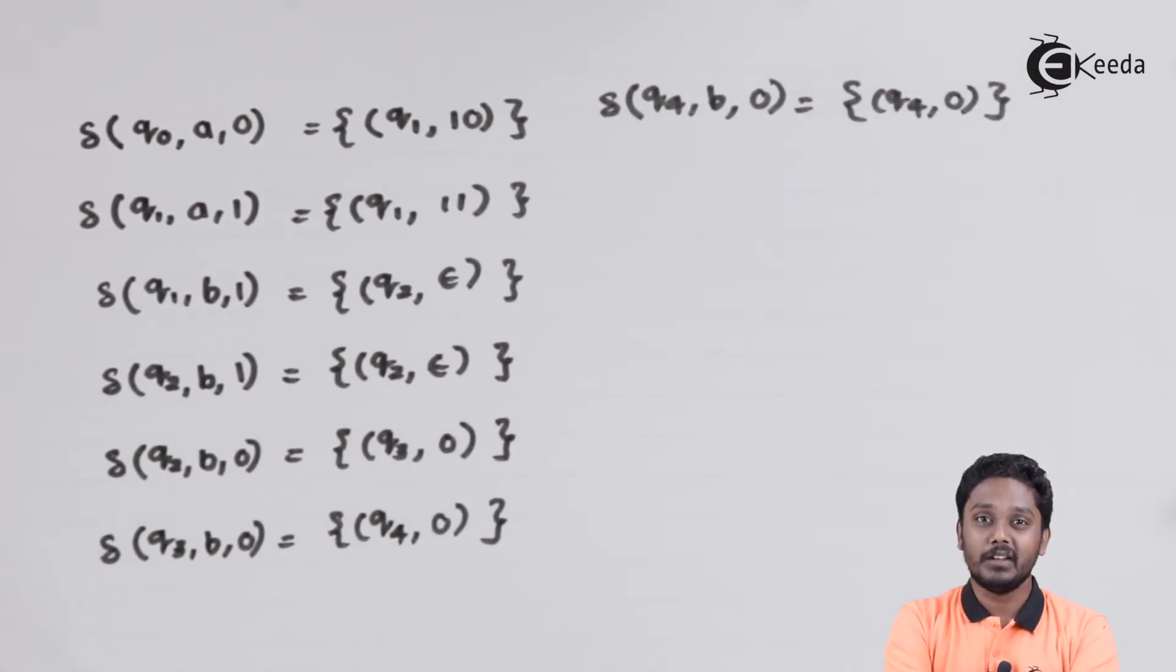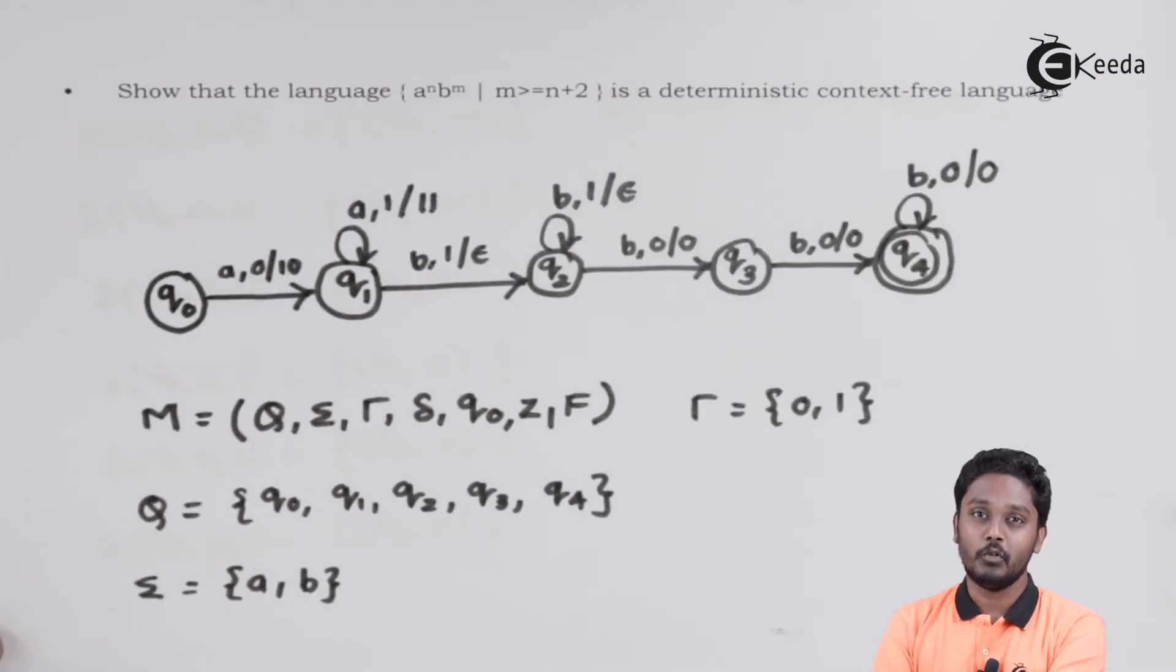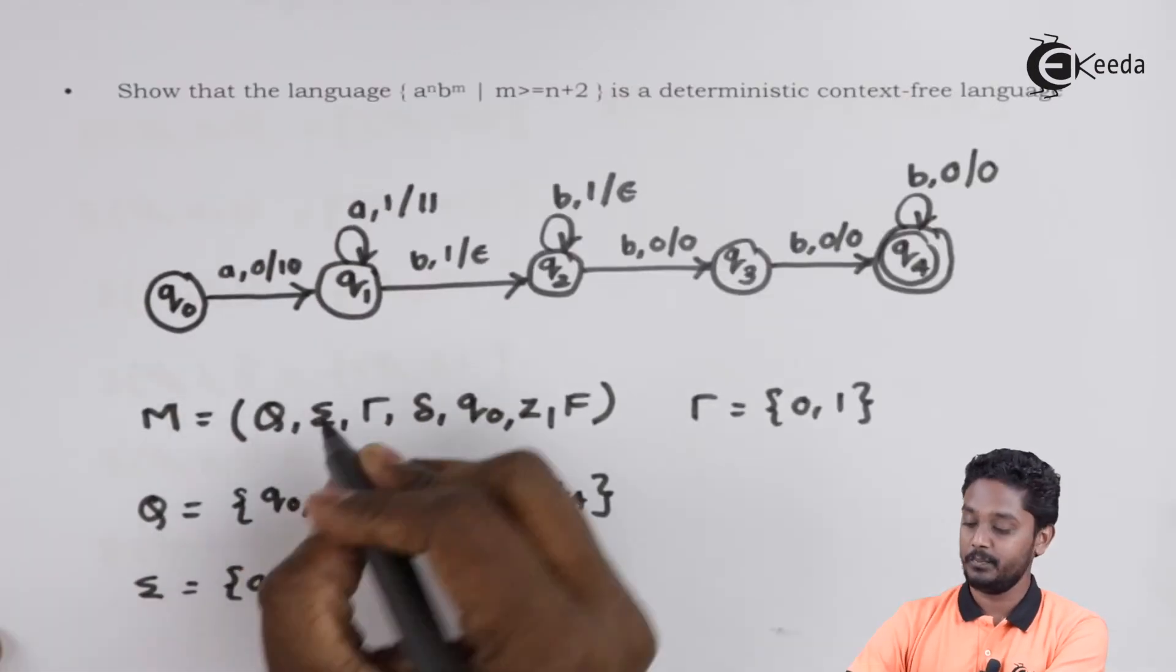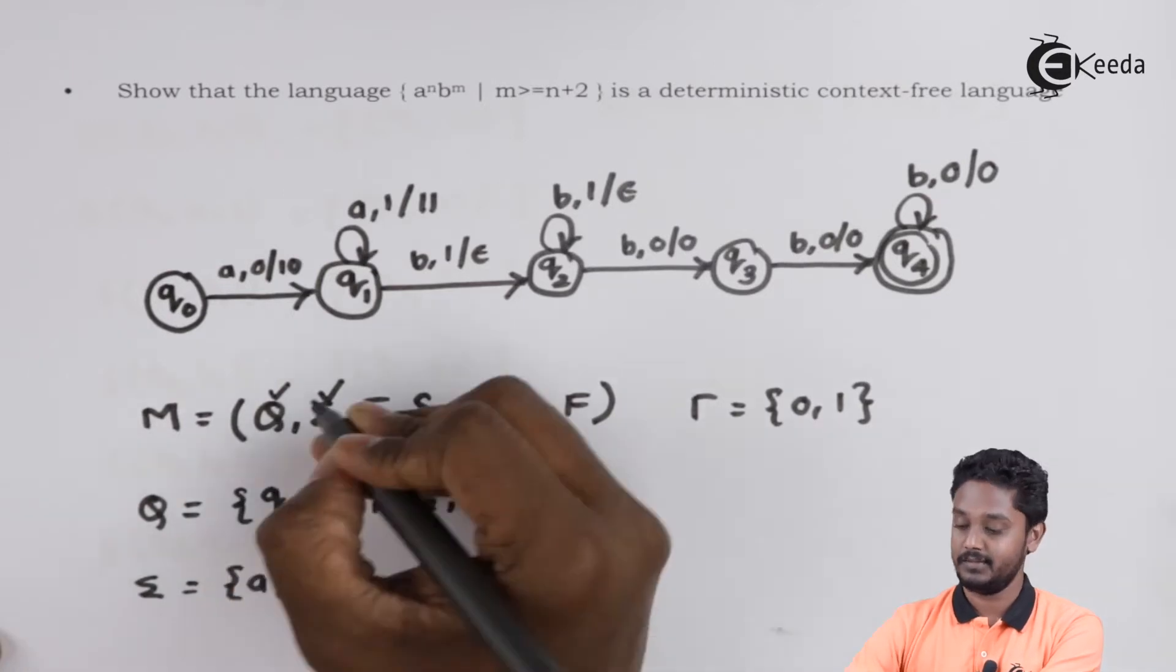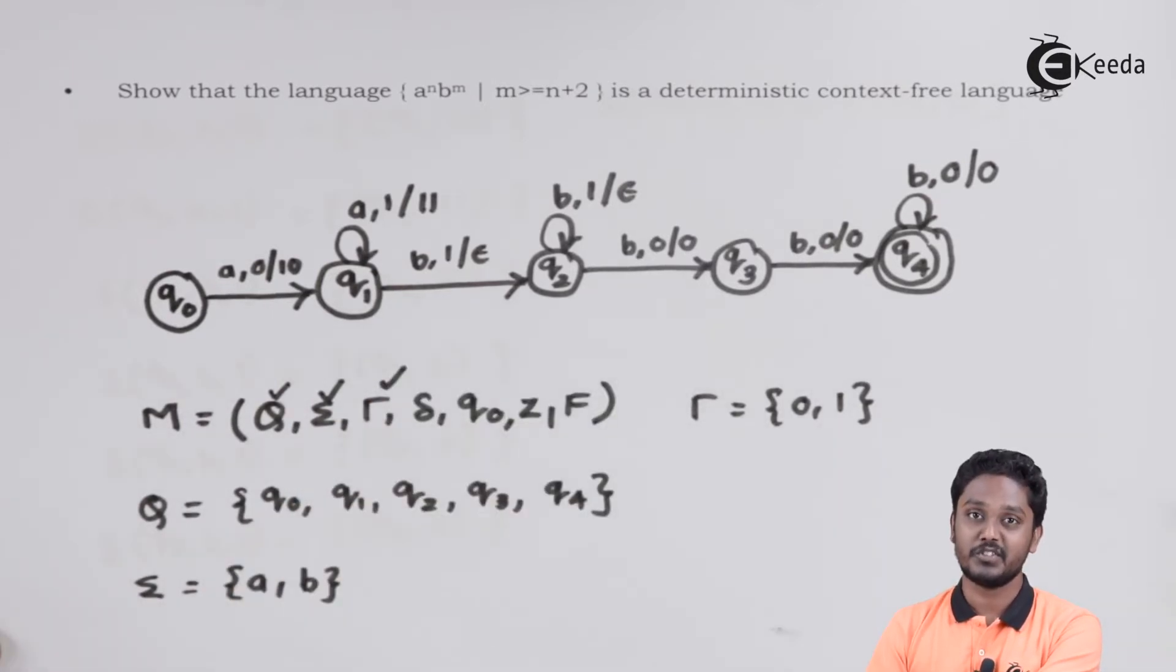With this, we have completed the transition function. Let us see the other components. So far, we have seen Q, we have seen sigma, we have discussed tau, that is stack symbol, we have discussed transition function delta.